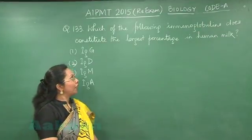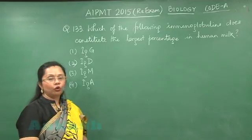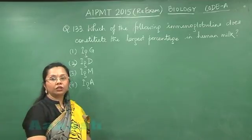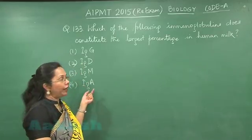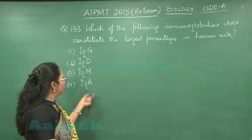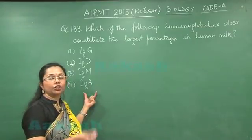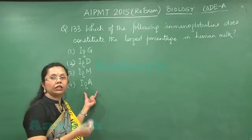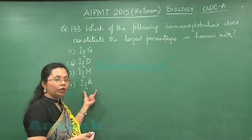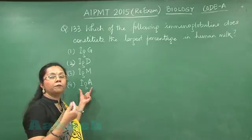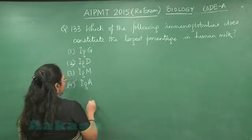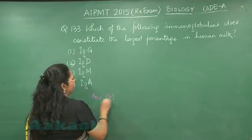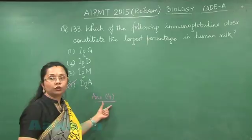Question 133: Which of the following immunoglobulins constitutes the largest percentage in human milk? Out of the four classes of antibodies or immunoglobulins given, we know that IgA is the secretory antibody. It is present in different secretions like tears, saliva, milk, and colostrum, and in this case it would be conferring passive immunity to the newborn child. So our answer is IgA, that is option number 4. Let us move to the next question, 134.